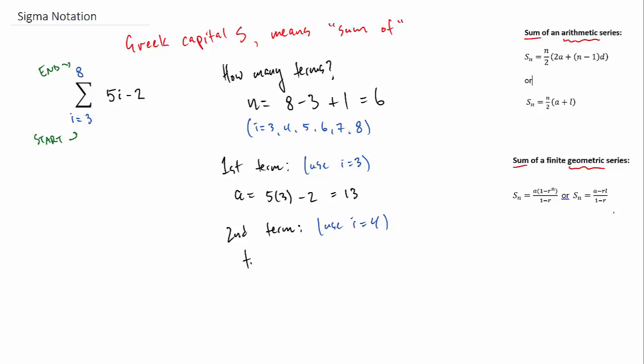So next up, we're going to find the first term. We're going to use the first index number, i equals 3, plug it into our function, and we get a value of 13.